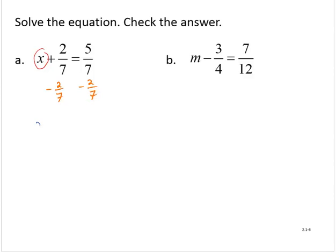This will isolate the x. And 5 sevenths subtract 2 sevenths is 3 sevenths.